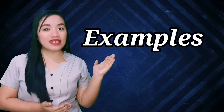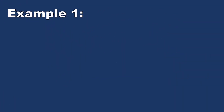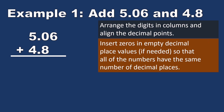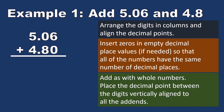Example number one: Add 5.06 and 4.8. Step one, arrange the digits in columns and align the decimal points. Step two, insert zeros so all numbers have the same number of decimal places. Step three, add as with whole numbers and place the decimal point aligned with all addends. Adding: 6 plus 0 is 6, 0 plus 8 is 8, 5 plus 4 is 9. The answer is 9.86.